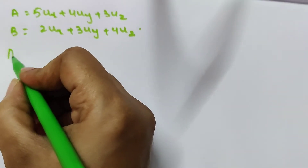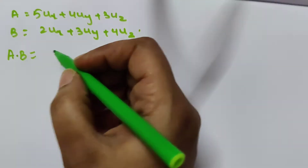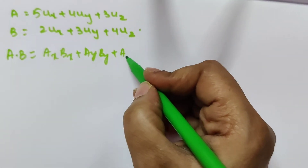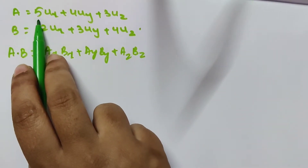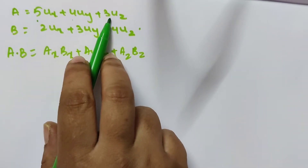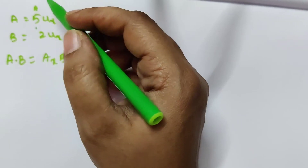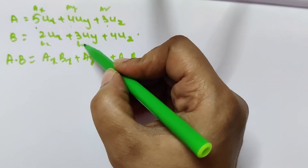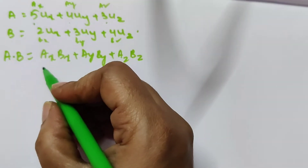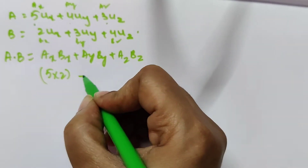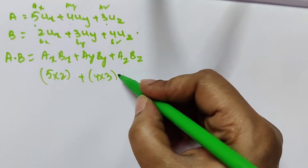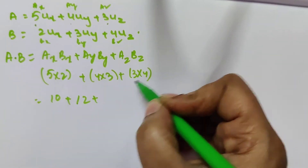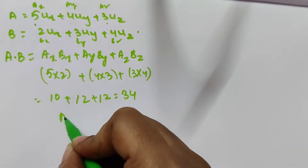Next is A dot B. The formula is: A dot B = Ax·Bx + Ay·By + Az·Bz. From the given values: Ax = 5, Ay = 4, Az = 3, Bx = 2, By = 3, Bz = 4. So A dot B = (5×2) + (4×3) + (3×4) = 10 + 12 + 12 = 34.